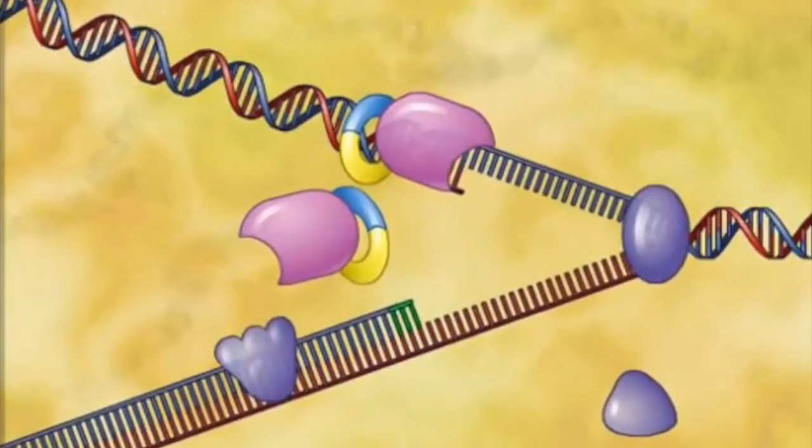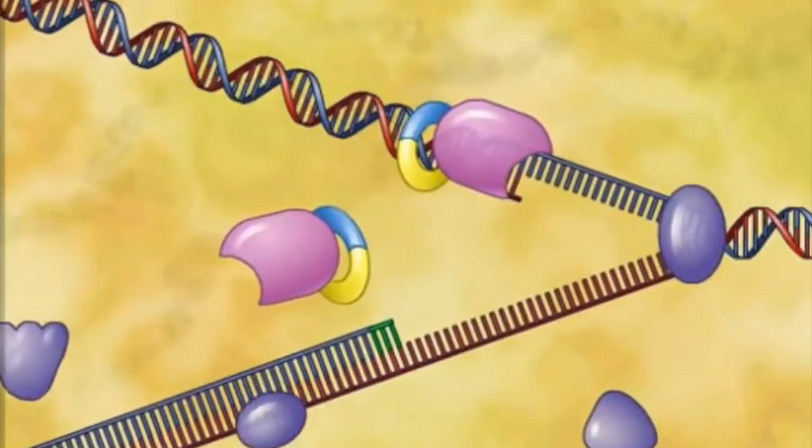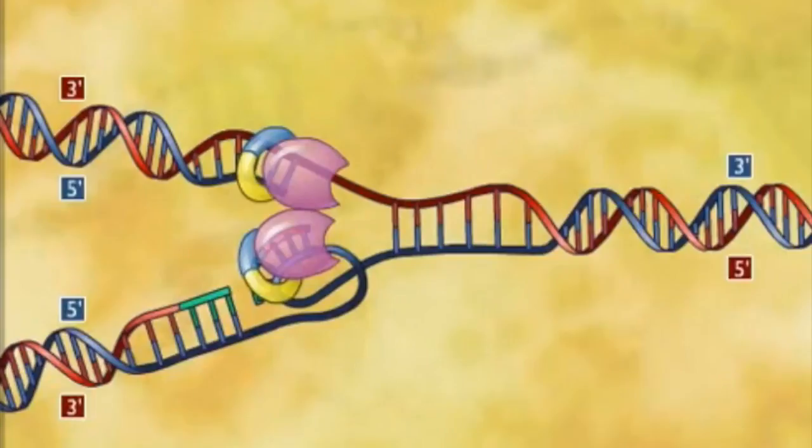Once an Okazaki fragment is formed, DNA polymerase I replaces the RNA nucleotides of the adjacent primer with DNA nucleotides. Once DNA polymerase I reaches a spot that has already been replicated, it stops.